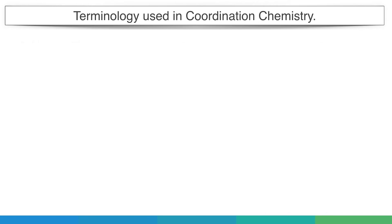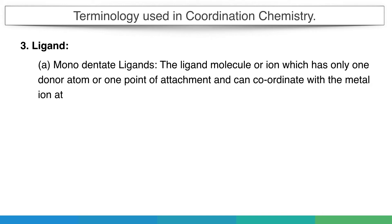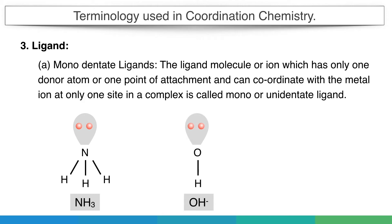Ligands can be sub-divided into groups depending on the number of possible points of attachment. If a ligand has only one lone pair, it can form only one bond or one point of attachment. A monodentate ligand is one that has only one donor atom or one point of attachment and can coordinate with the metal ion at only one site in a complex. Examples are ammonia, hydroxyl ion, and water — all having only one lone pair which can be donated to the metal atom.